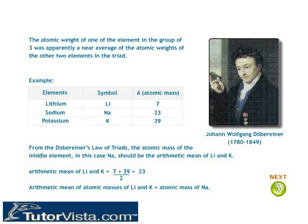Dobereiner's Triads: In 1817, Dobereiner observed that certain elements with similar chemical properties could be grouped together. When these elements were arranged in increasing order of their atomic masses, they generally occurred in groups of three, called Triads. He noticed that the atomic mass of the middle element of the triad was the arithmetic mean of the other two elements.